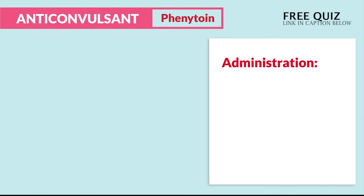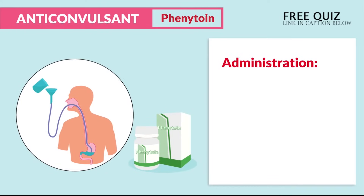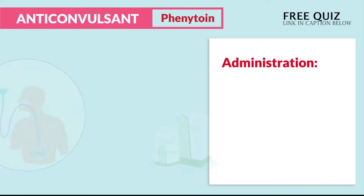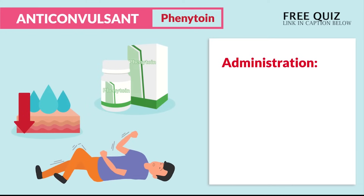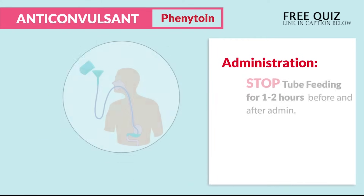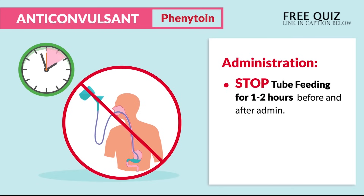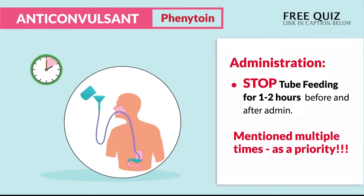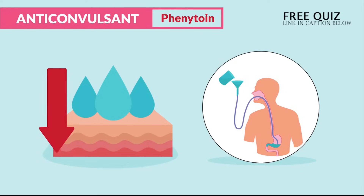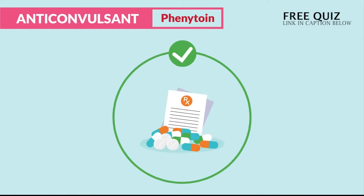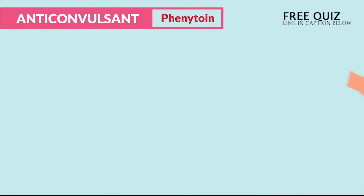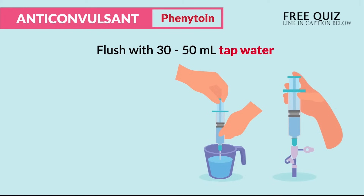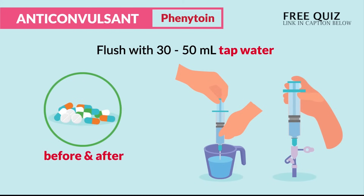As far as administration, one question bank stresses the importance of phenytoin with tube feedings, stating it can decrease absorption and cause seizures. The big key word: stop tube feedings one to two hours before and after administration. This was mentioned multiple times as a priority, since tube feedings can interfere with absorption and decrease phenytoin effectiveness. For tube feedings, flush with 30 to 50 mLs of tap water before and after the drug is given.